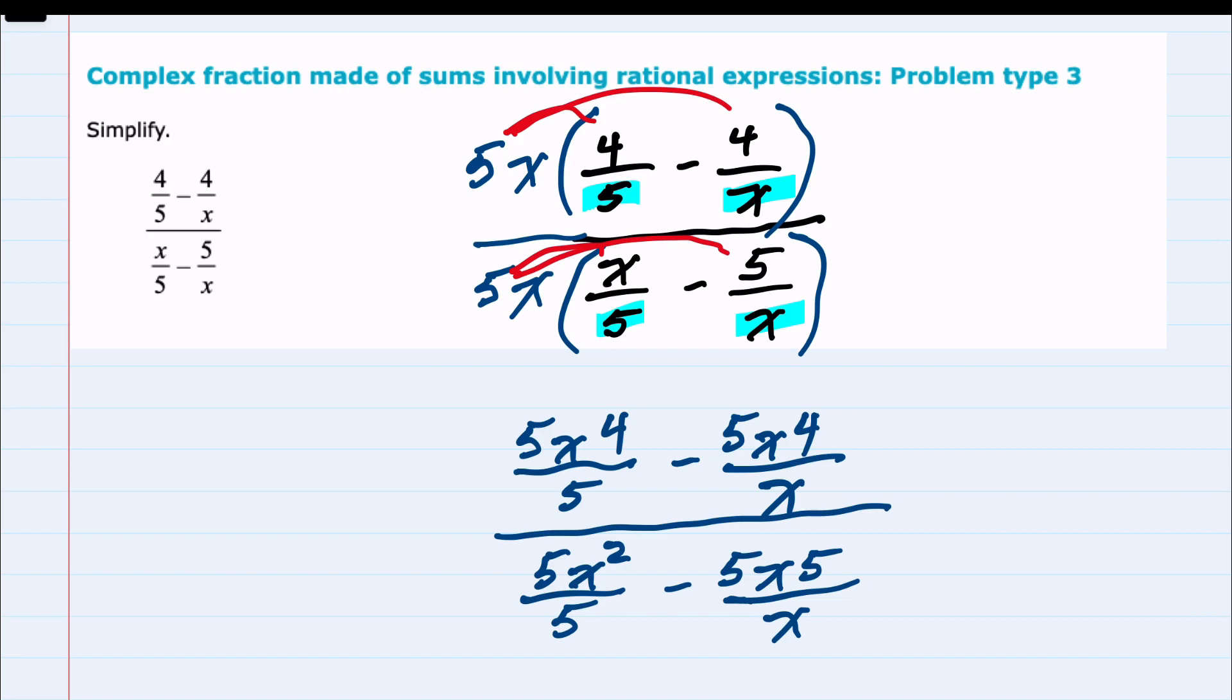And this is where we can see the advantage of multiplying by that lowest common denominator because in this first fraction the 5's cancel. In the second fraction the x's cancel. In the denominator the 5's cancel. And then for the second fraction in the denominator the x's cancel.